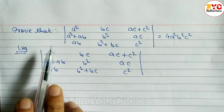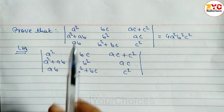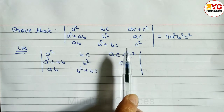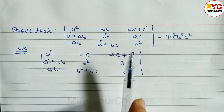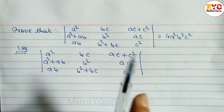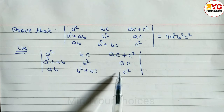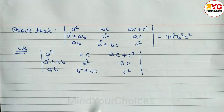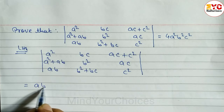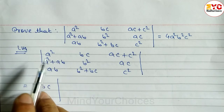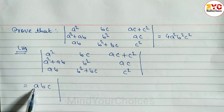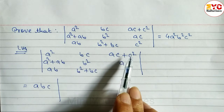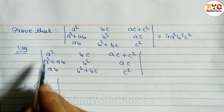We can see here we can take 'a' common from the first column, 'b' common from the second column, and 'c' common from the third column. When you take a common factor, you must take it from all three elements of that column. So let's take abc out: a from the first column, b from the second column, c from the third column.